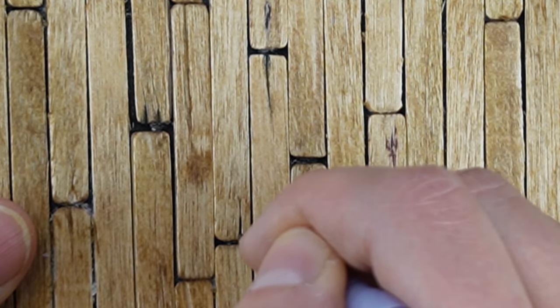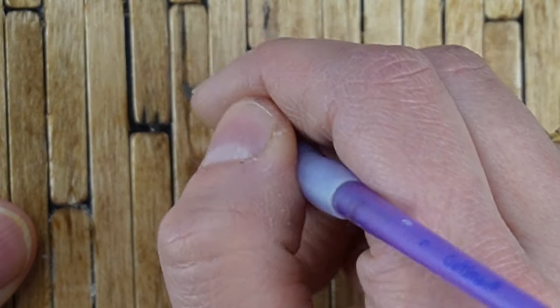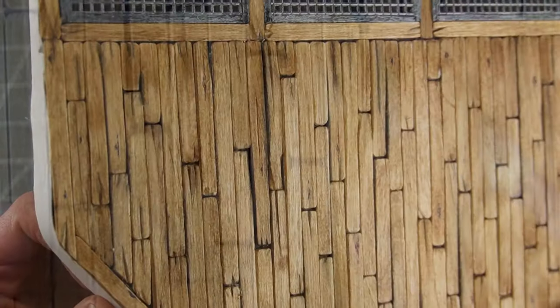A little bit of watered down black paint to emphasize the exacto cracks I created and that's our floor done.